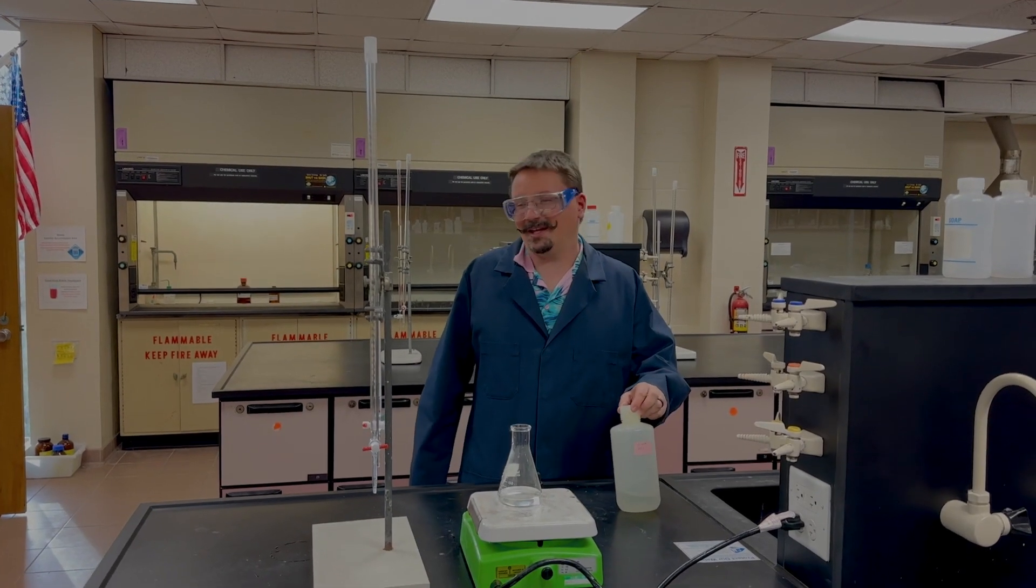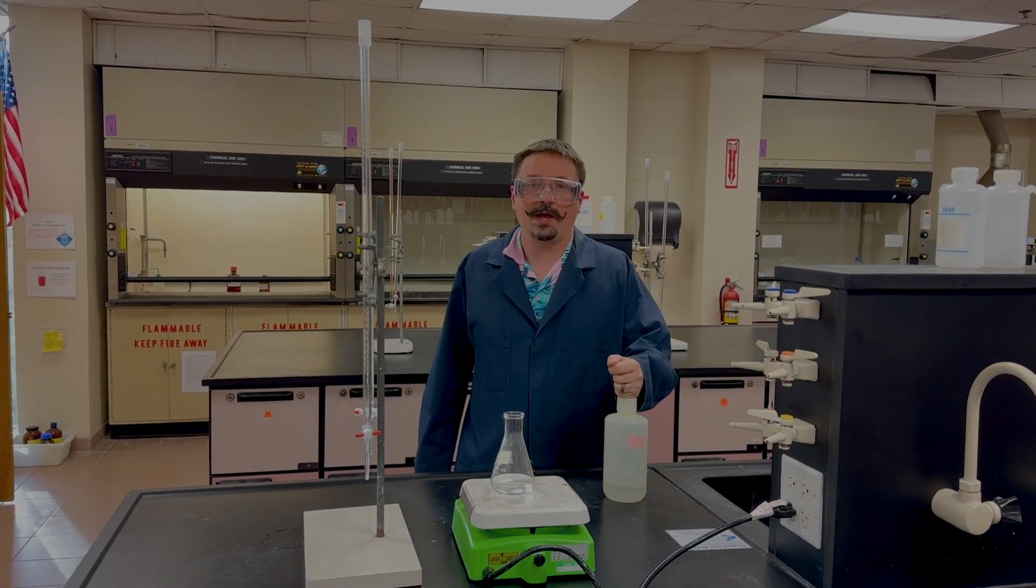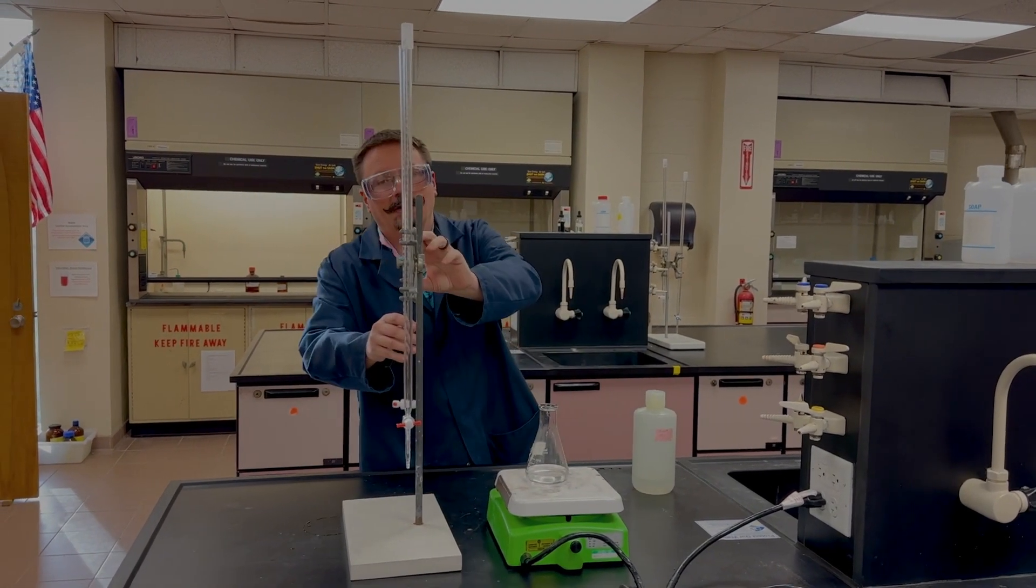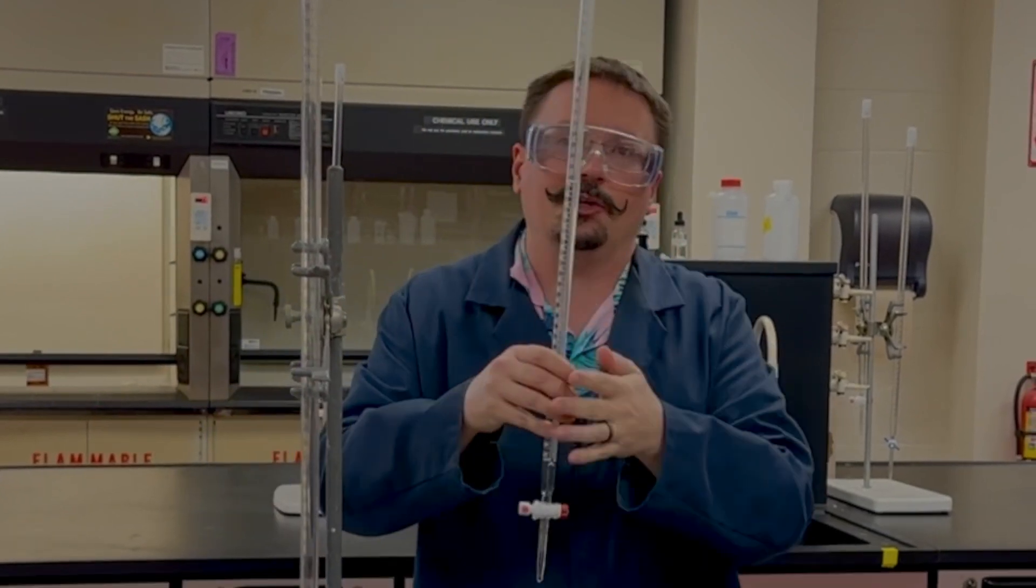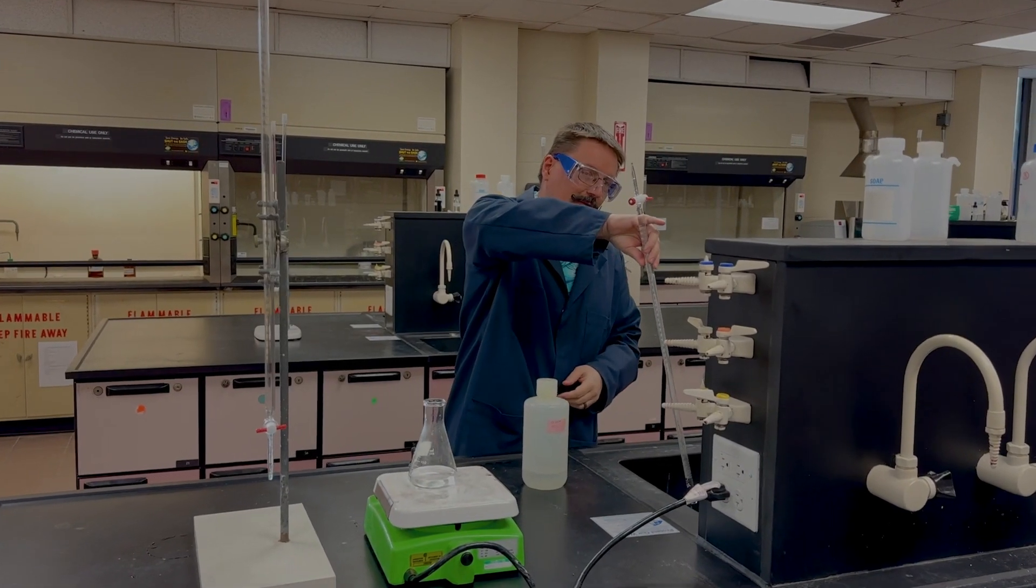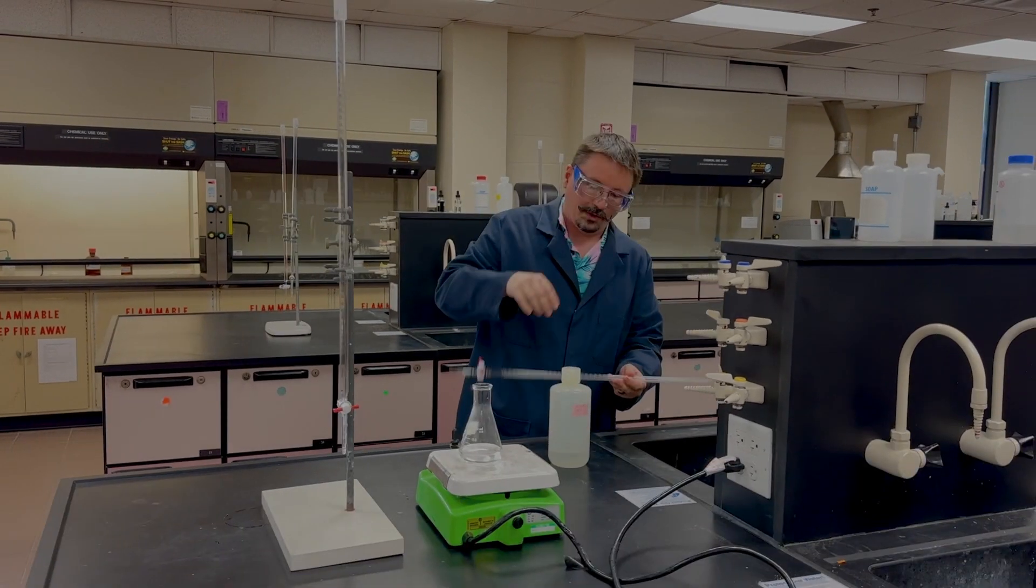All right, hello again. We're going to go over the soda ash determination experiment. This is primarily titration, so you can start with your burette again. Your burette should have DI water in it - that's what it should have been stored with - so you can just empty that out. We're going to titrate a base with an acid.